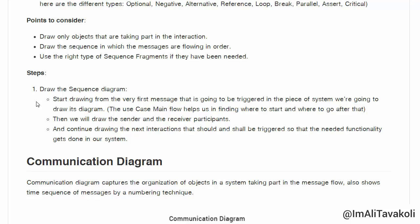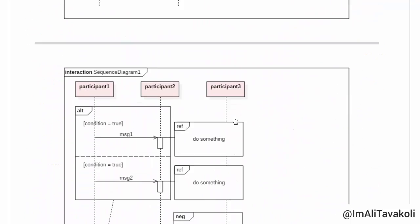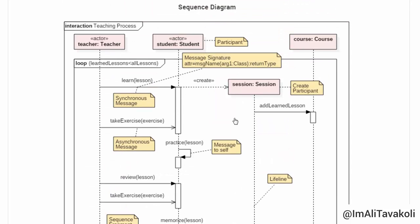Steps to draw a sequence diagram: start drawing from the very first message that is going to be triggered in the piece of software. The use case main flow helps us find where to start and where to go after that. First, identify the first message to be triggered, then draw the sender and receiver participants for that message, and continue drawing other messages until you have completed the process you are demonstrating.